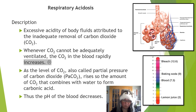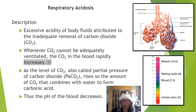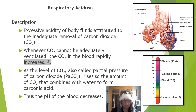Respiratory acidosis — excessive acidity of body fluids attributed to inadequate removal of carbon dioxide (CO2), which happens in the lungs, specifically in alveolar sacs. When CO2 cannot be adequately ventilated, CO2 in the blood rapidly increases. As PaCO2 — partial pressure of carbon dioxide — rises, CO2 combines with water in the blood forming carbonic acid, so blood pH decreases making it acidic. Blood is normally neutral — as it becomes more acidic the numbers lower on the pH scale.